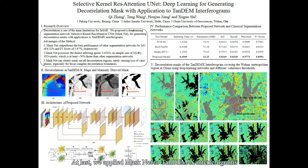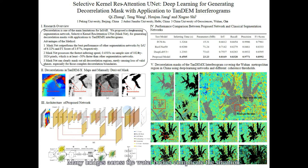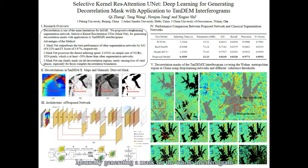Finally, we applied our MaskNet to TanDEM-X interferograms covering the metropolitan region of Wuhan, China. For this region, the decorrelations are mainly caused by lakes and rivers, and evenly distributed in the city. Many bridges across the water bodies complicate the situation, making manually generating a mask for the whole interferogram extremely difficult, and even infeasible.